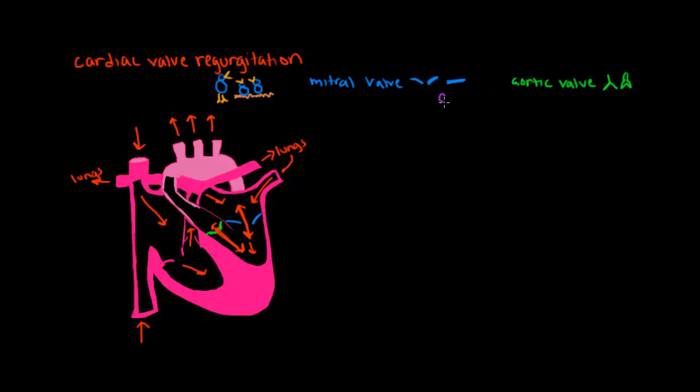So what causes mitral valve regurgitation and aortic valve regurgitation? Although these are two different conditions, they do share some etiologies. Both mitral valve regurgitation and aortic valve regurgitation can be caused by congenital defects, meaning problems with the valve that you were born with.